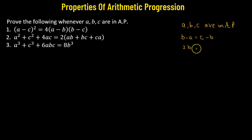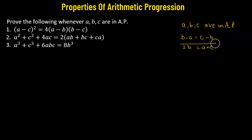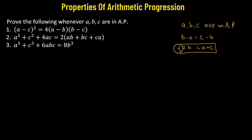Rearranging the equation, we have 2b equals a plus c. So whenever we have a, b, c in arithmetic progression, the condition is that two times the middle term equals the sum of the first and the third term. We'll be using that. So first, let's come to our first proof.